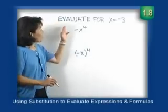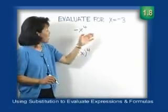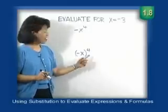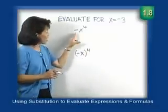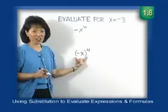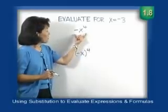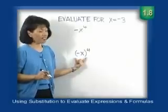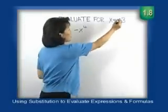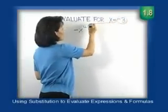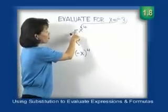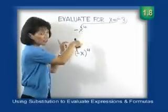We're going to evaluate for x equals negative 3: the expression negative x to the fourth power, and the expression negative x in parentheses to the fourth power. This is a case where we have to be very careful, because those parentheses — which may not look significant — make a significant difference. We'll use the substitution method and substitute negative 3 in for x.